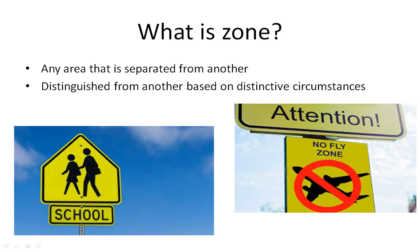How can a zone be defined? A zone is an area that is separated from another on the basis of various restrictions or limitations in that particular area, or in other words, distinguished from another area based on distinctive circumstances. In this slide, I have two images. On the left-hand side, there is a signboard of a school, meaning that area has schools and comes under a school zone. On the right-hand side, it says no-fly zone, meaning aeroplanes are not allowed to fly in that particular area, perhaps because of the height of buildings present in that area. So zones are any area separated from another area based on a particular restriction.